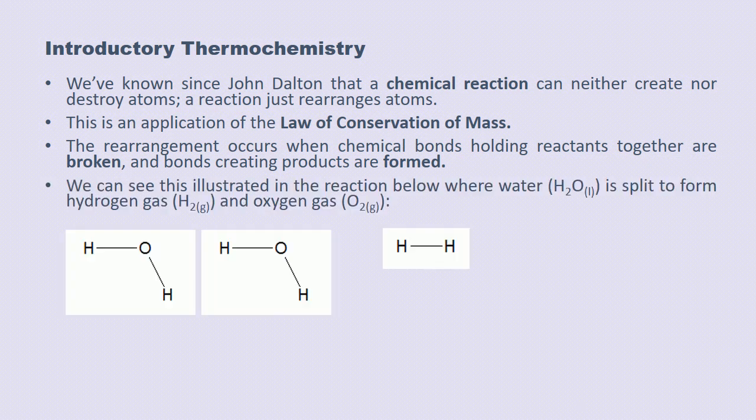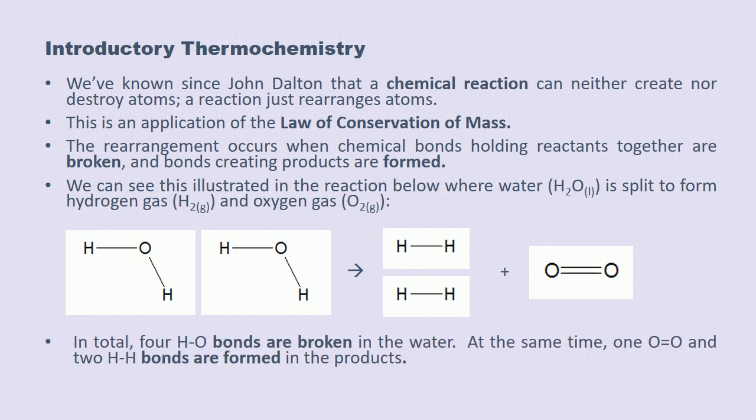And we can see this illustrated below. Here we have a reaction between two water molecules and they're split to form two hydrogen molecules and one oxygen molecule. If we think of this in terms of chemical bonds, we'll see that there are four hydrogen to oxygen bonds broken in the water, the reactants, and at the same time, one oxygen to oxygen double bond is formed and two hydrogen to hydrogen single bonds are formed in the products.